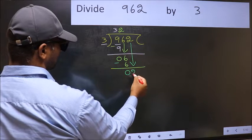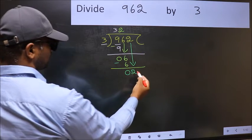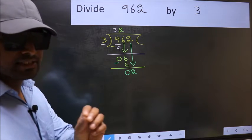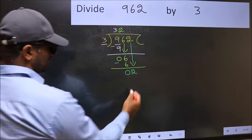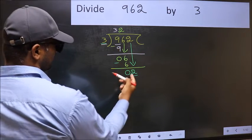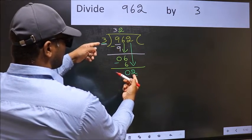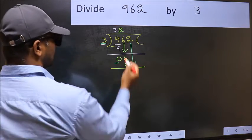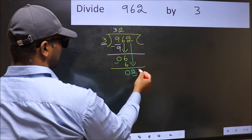After this step the mistake happens and the mistake is this. Here we have 2 and here 3. 2 is smaller than 3 so what many do is they directly put a dot and take 0, which is wrong.